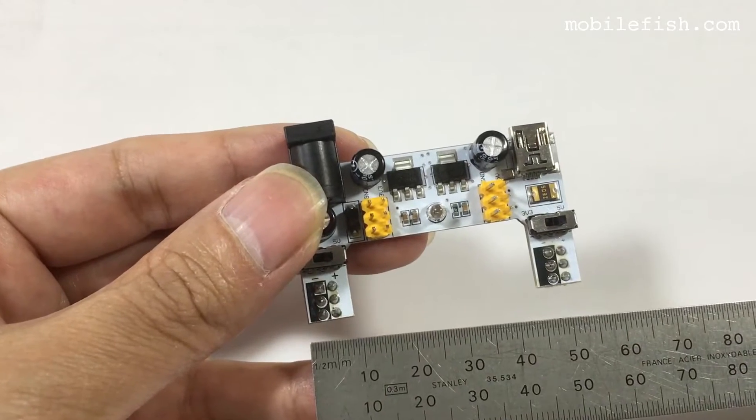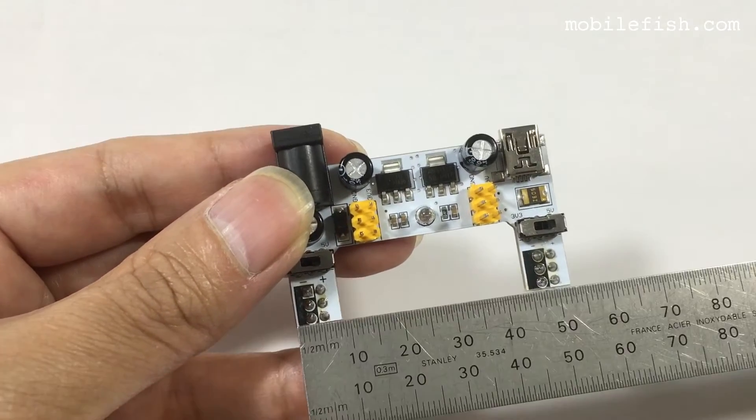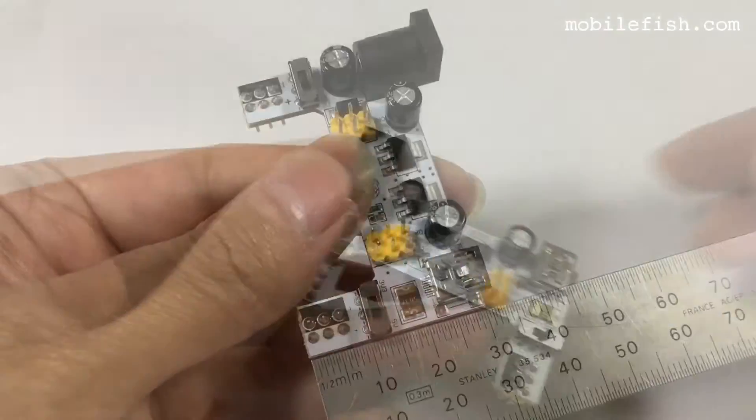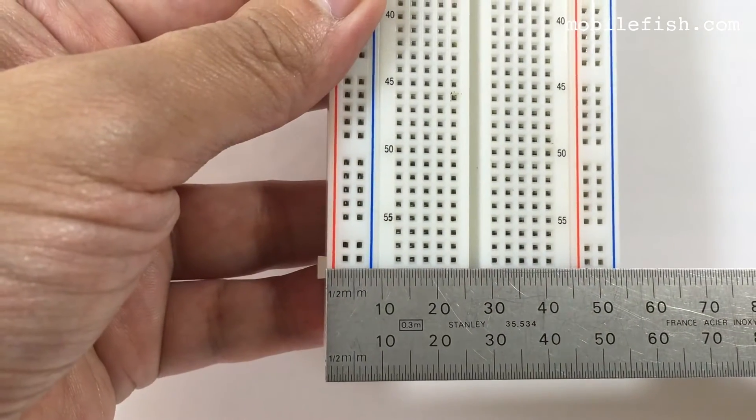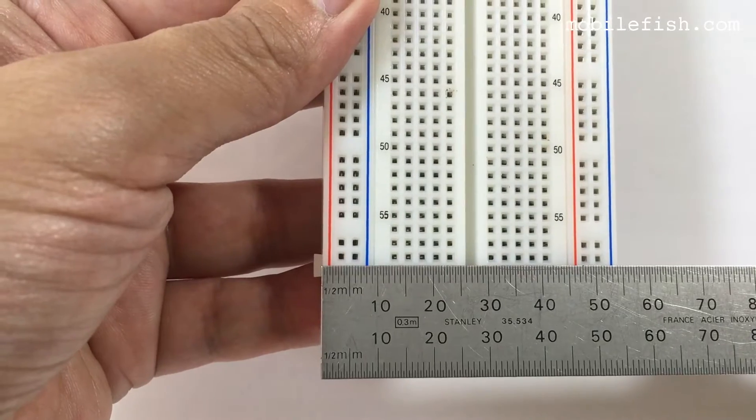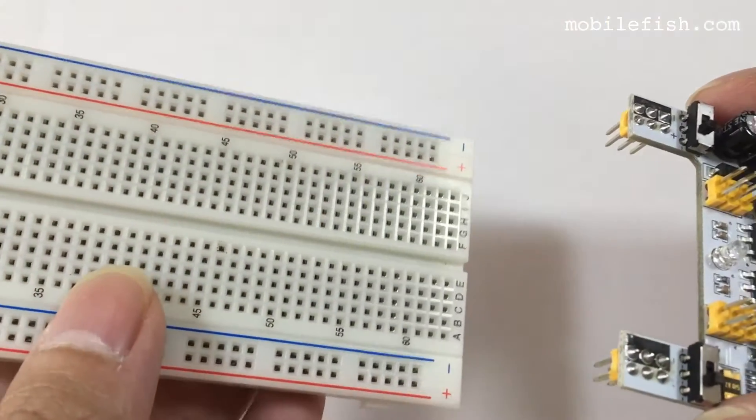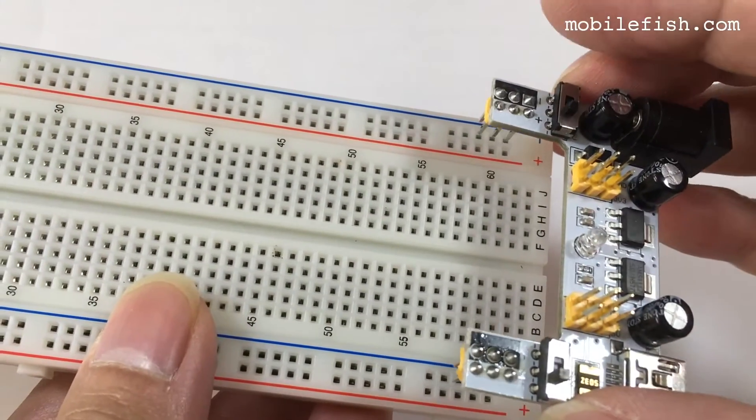The size of the breadboard power converter is 52 millimeters width and a length of 30 millimeters. Here is my breadboard with a width of 54 millimeters. The breadboard power converter fits nicely on this breadboard.